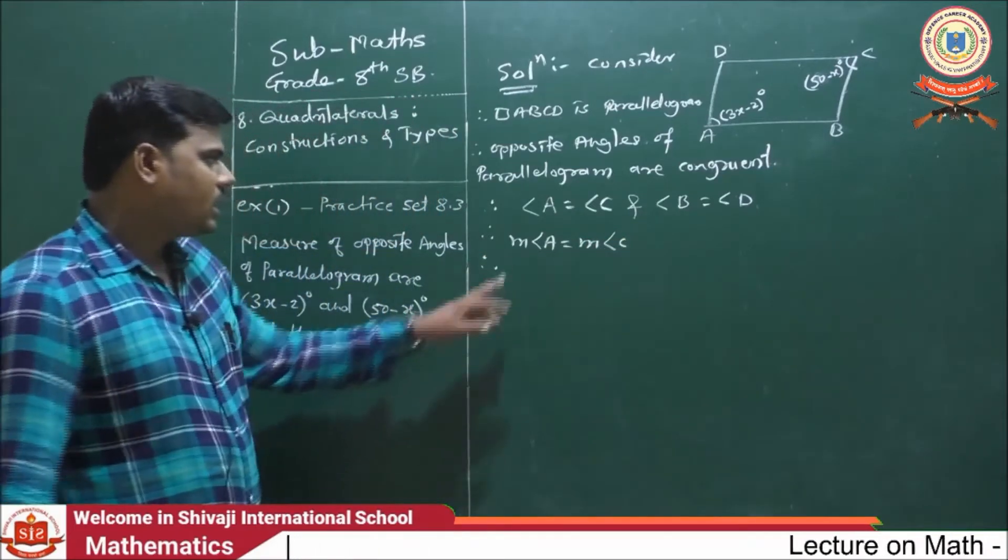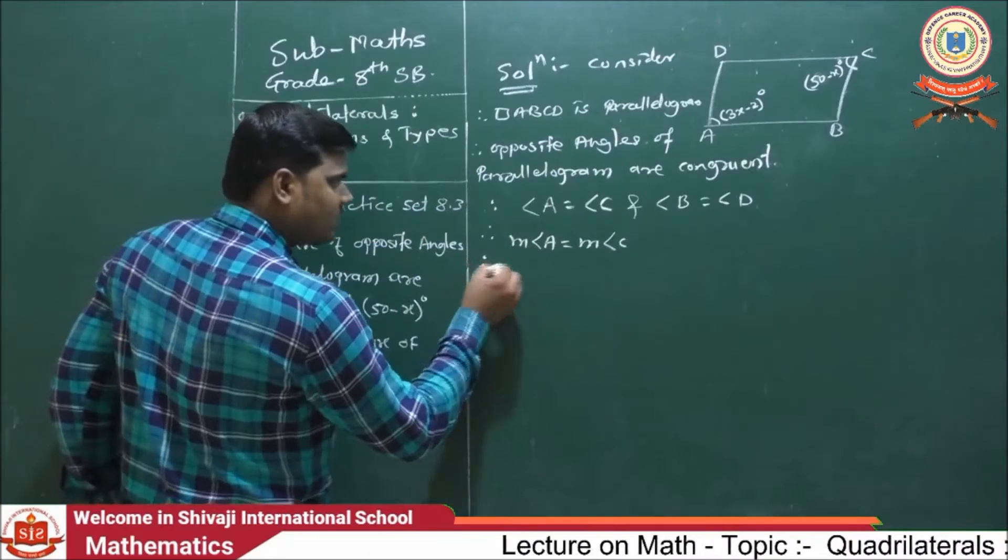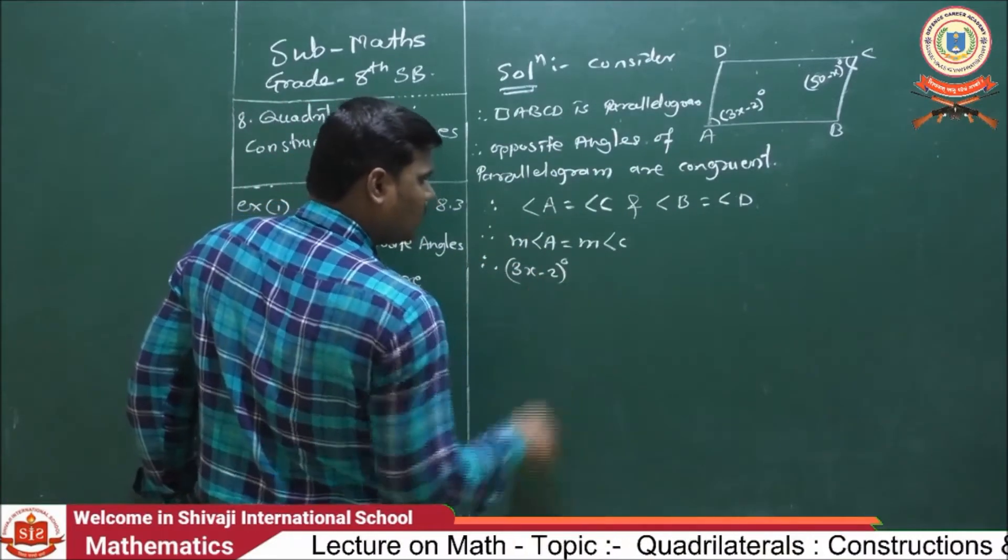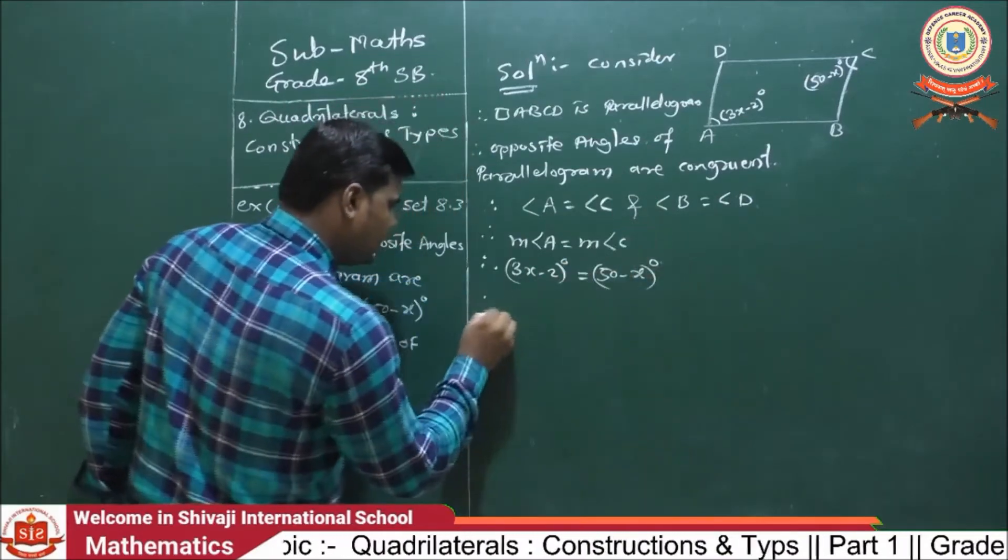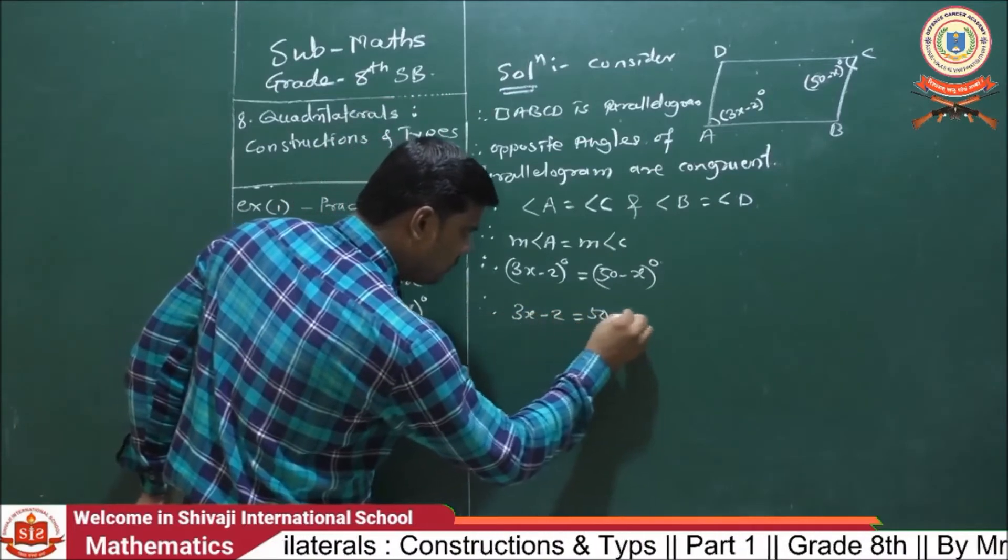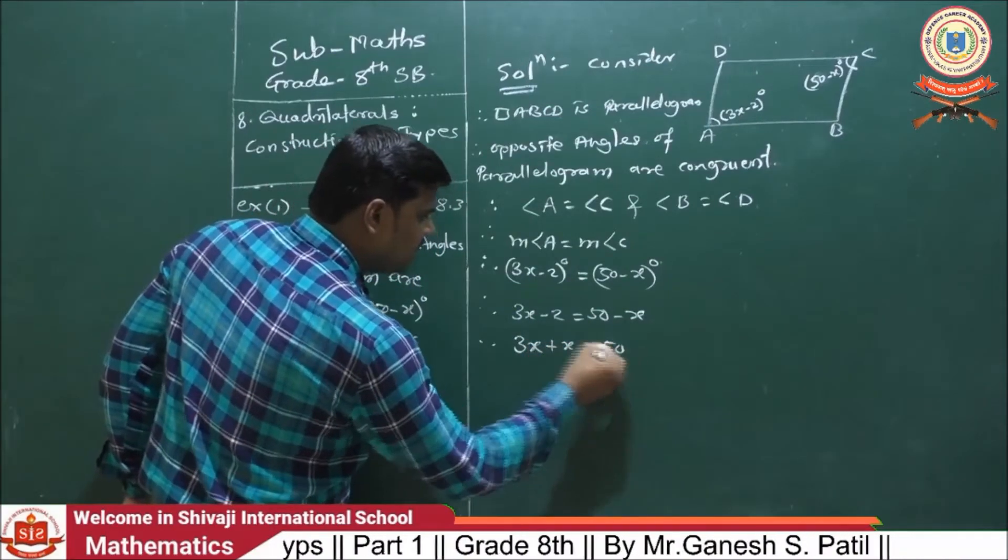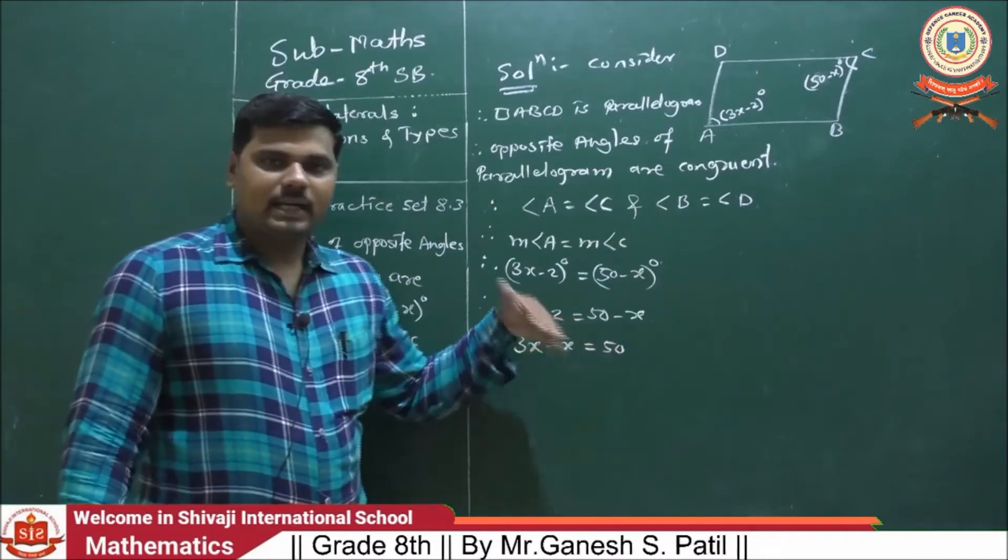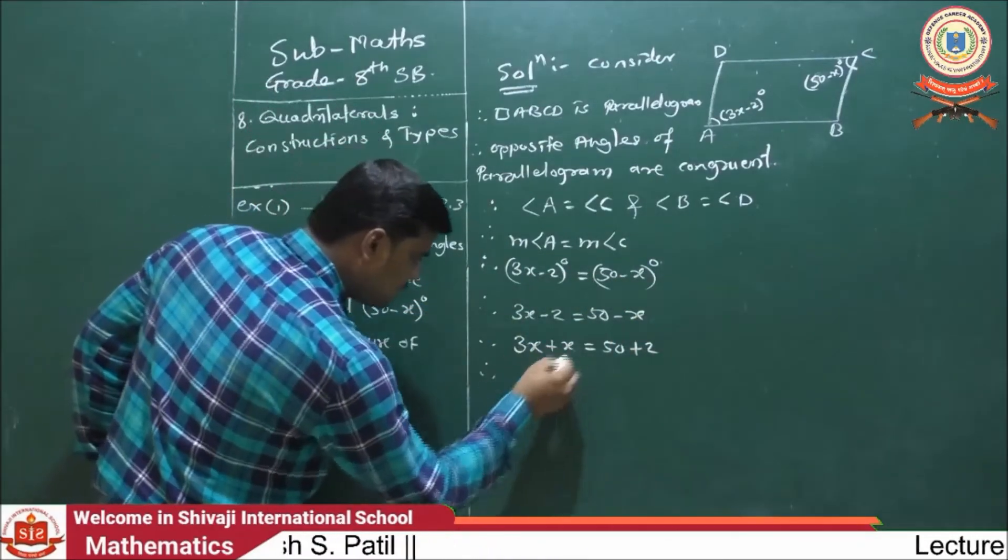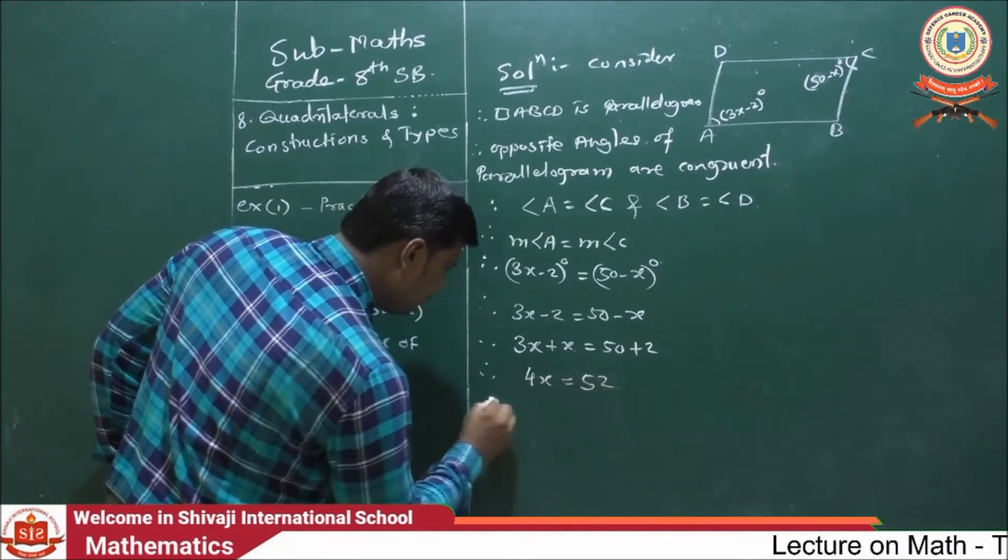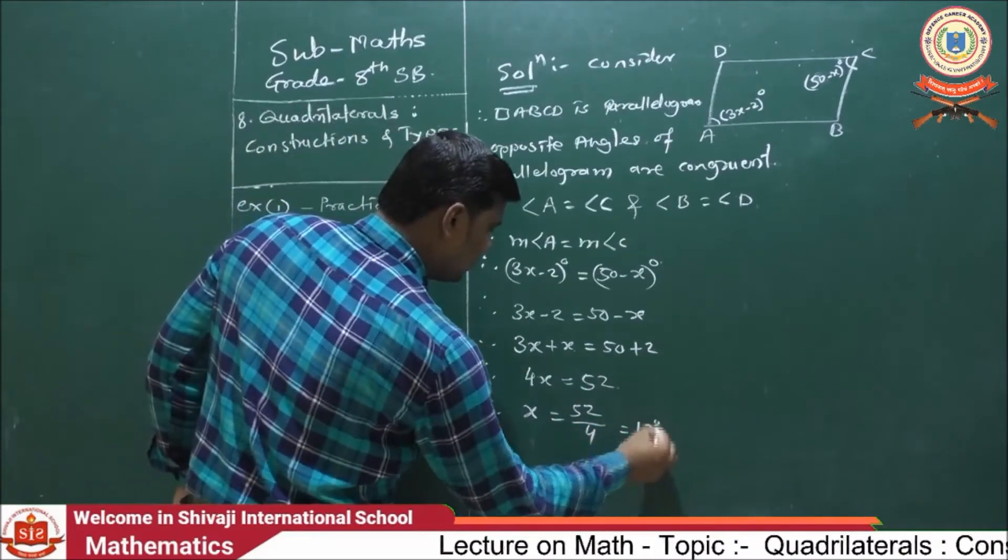Here, angle A, the measure of angle A is 3x minus 2 degrees. We are just putting the values: 3x minus 2 degrees is equals to 50 minus x degrees. This minus transpose to this side, it becomes plus, and these 2 going to that side, it will become plus 2. Then, 4x is equals to 52. Then, x is equals to 52 upon 4. Then, 13 degrees.